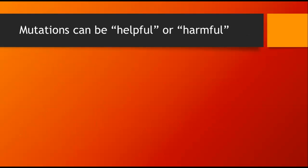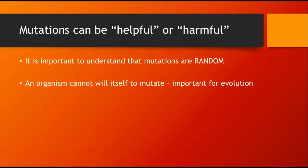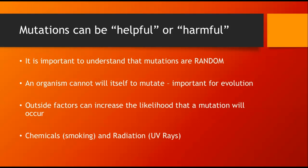And it's important to understand that when we talk about mutations, mutations happen completely by chance and are completely random. An organism cannot will itself to mutate. That's going to be important for evolution when we talk about evolution later on. But these mutations and changes to the genetic code happen completely randomly. Outside factors, however, can increase the likelihood that a mutation will occur. Things like chemicals when you're smoking or drinking or taking other drugs, radiation like UV radiation from the sun. Those can increase the likelihood that mutations will occur, but it doesn't guarantee that those mutations will occur or where those mutations will occur. If it happens, it happens randomly due to chance.